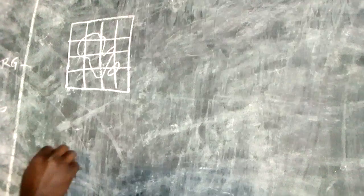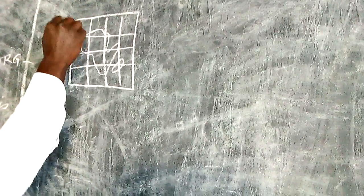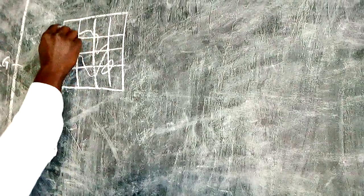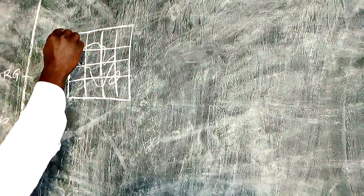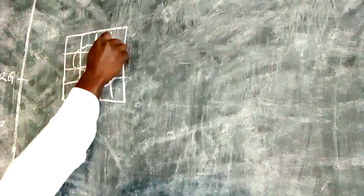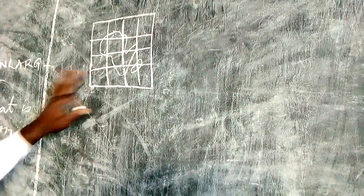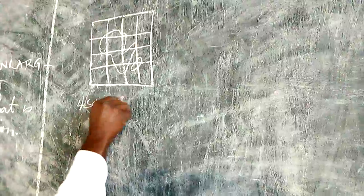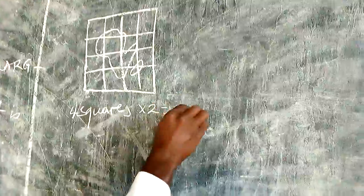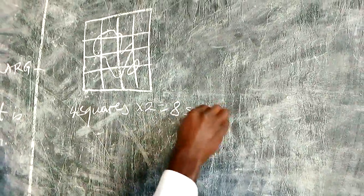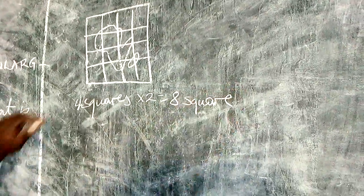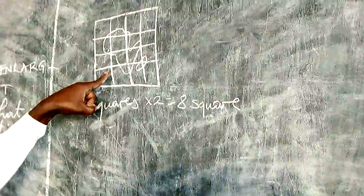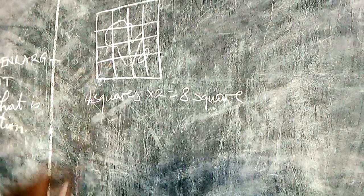Meaning that if this map is made of 1, 2, 3, 4 — there are 4 squares. It means if there were 4 squares and we want to enlarge this map, we are going to multiply it by 2, and therefore we shall be having 8 squares. One square is going to be multiplied by 2, meaning that it is going to be doubled.